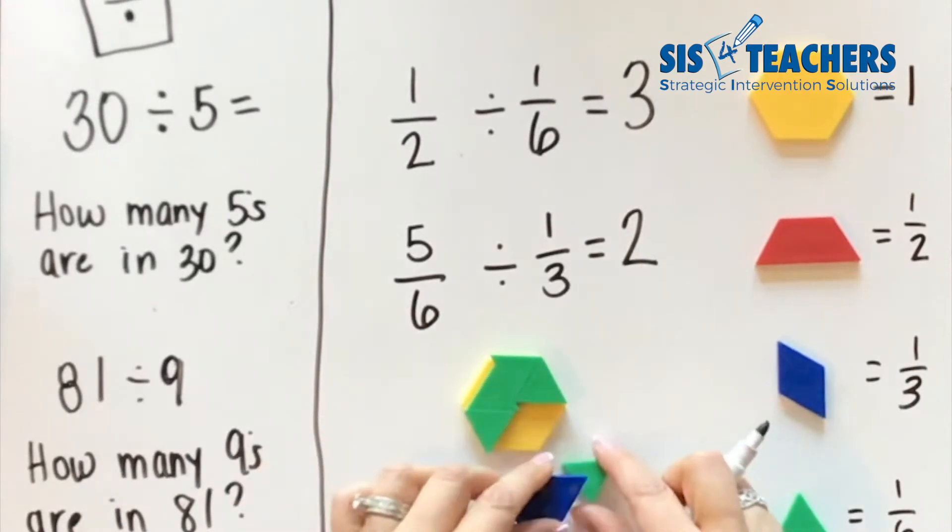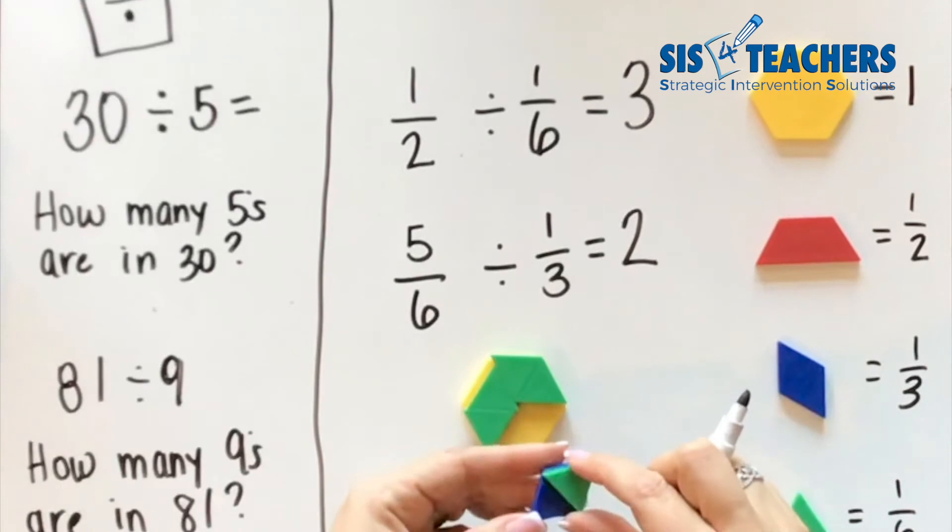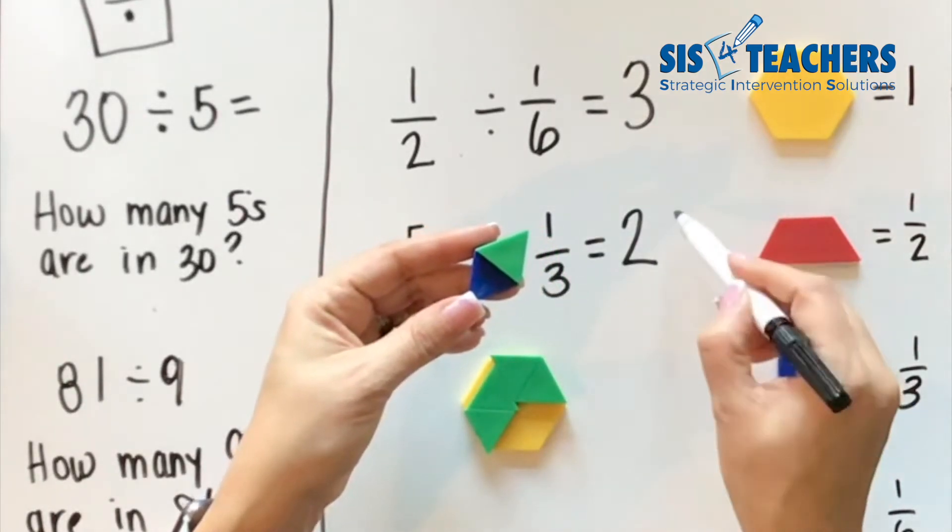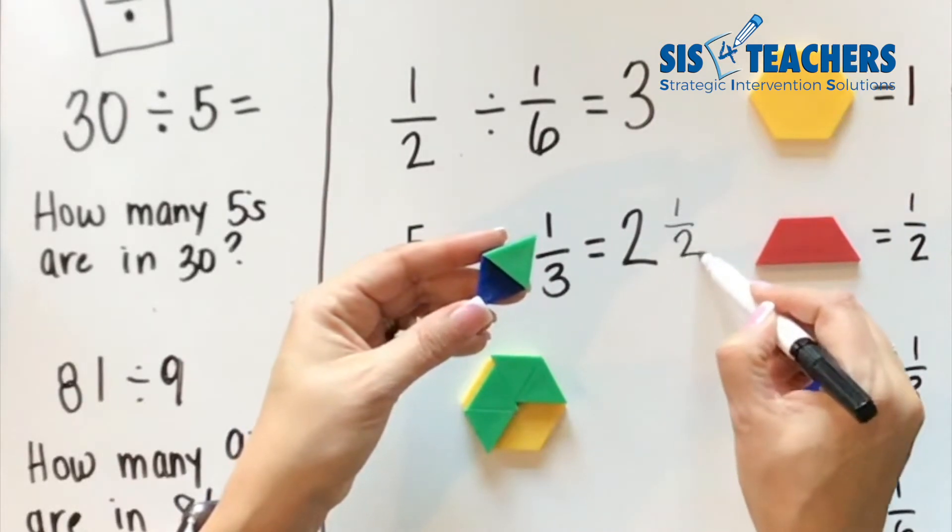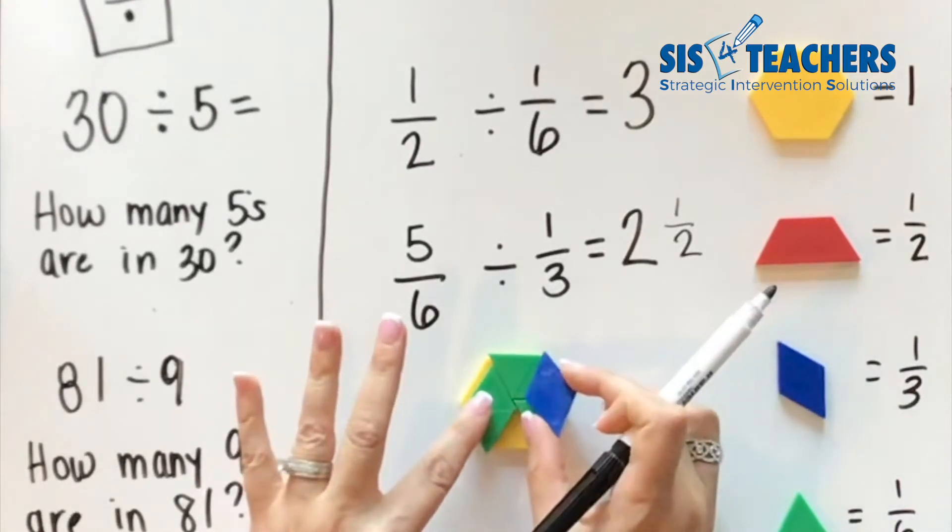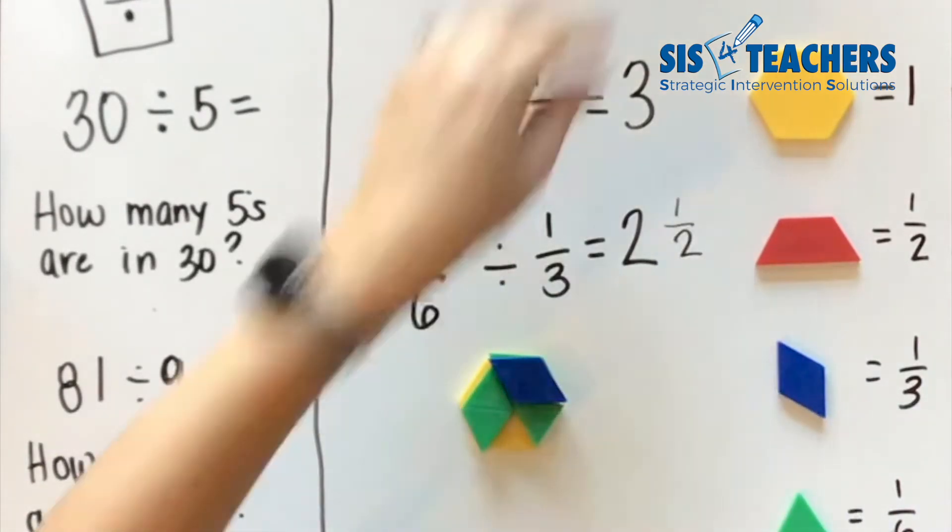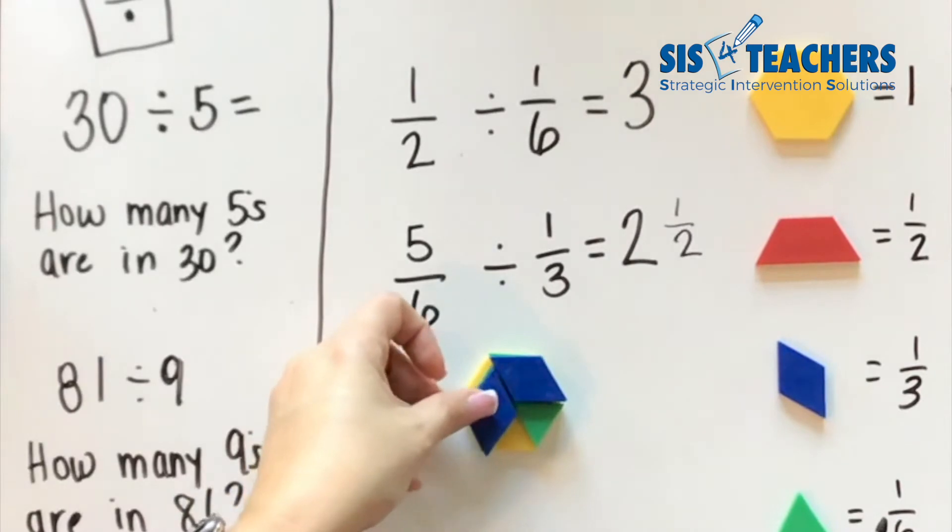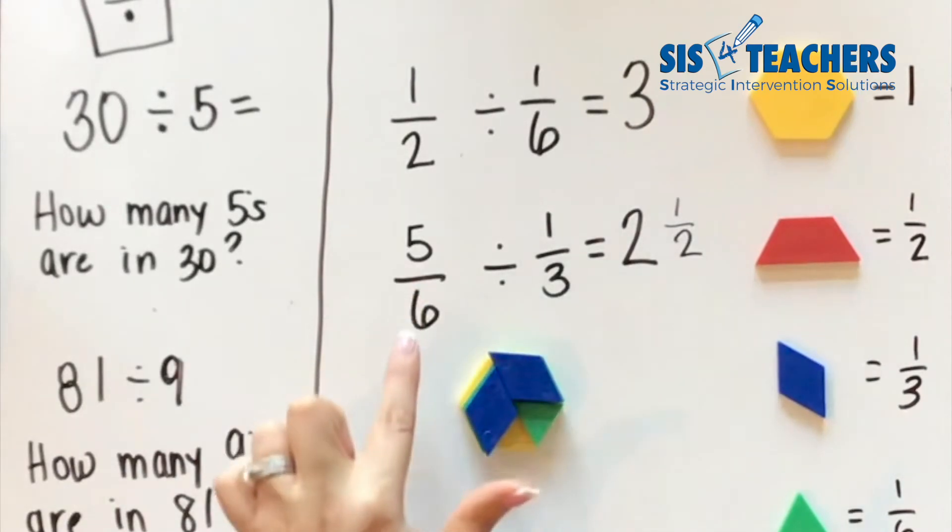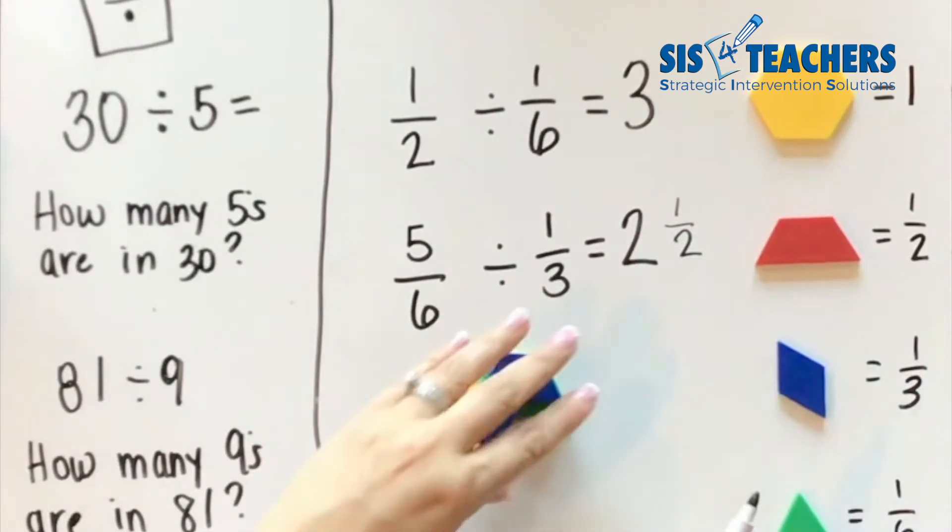But here I'm left over with part of a third. The part that's left is 1/2 of what we're talking about here. So if I built it, there's my one that fits, my other third that fits, and this represents half of this. It doesn't fill it the entire way, it only fills it half. That's why it's 2 1/2 times. So I know that 1/3 fits into 5/6, 2 1/2 times.